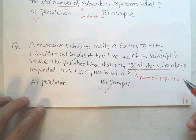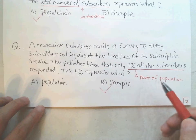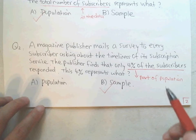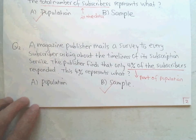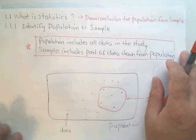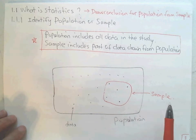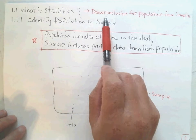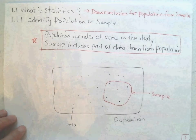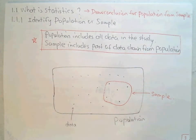When we learn statistics, this is the major idea: we only have small information — a part of the population. What we need to do is draw conclusions for the population. Remember, what is statistics? We only use a small part of the data, which is called the sample. What do we need to do? Draw conclusions for the population. We only use some limited information. Thank you.